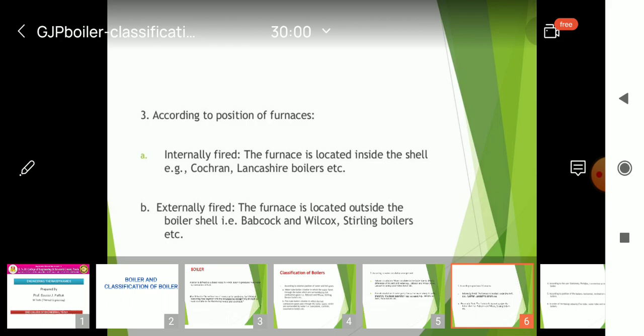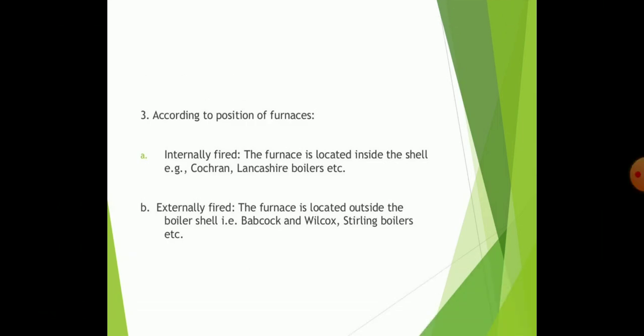According to the position of furnace, internally fired boilers are, the furnace is located inside the shell, for example Coran and Langshire boilers. And also externally fired boilers, i.e., the furnace is located outside the boiler shell, i.e., Babcock and Wilcox boilers.